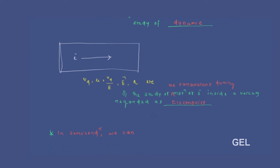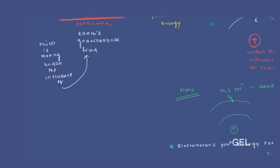In semiconductor we can control the conducting property of a material. In semiconductor we can control the conducting nature of any material. So it became easier in case of semiconductor.